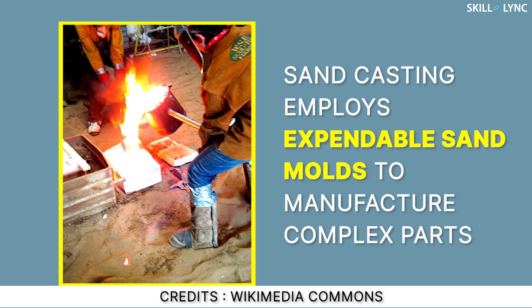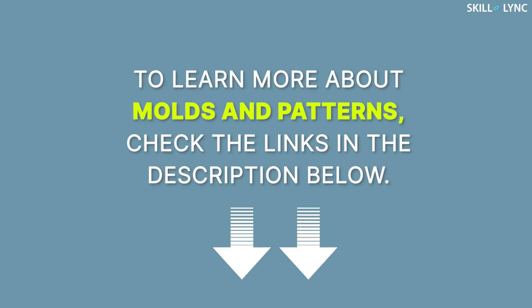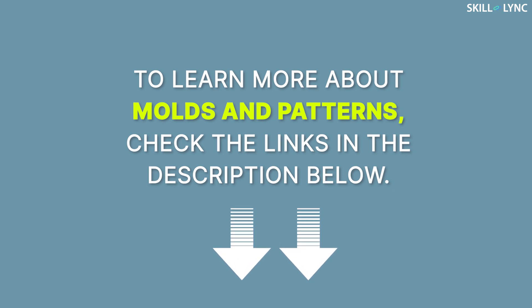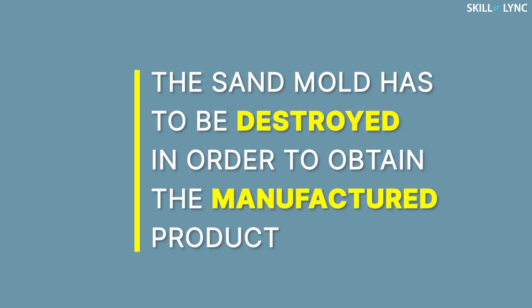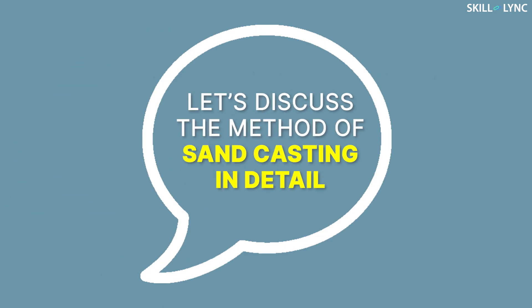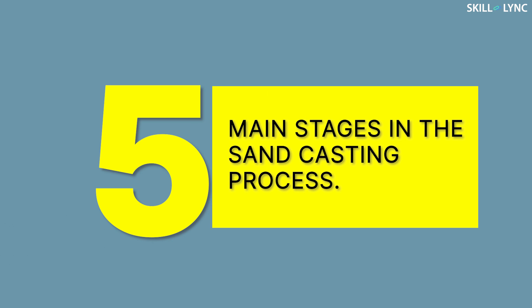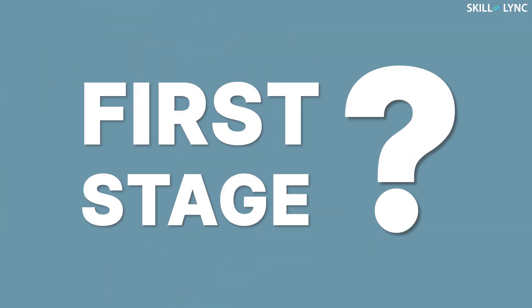Sand casting is perhaps one of the most popular and simplest casting processes. Just as the name suggests, sand casting employs expendable sand molds to manufacture complex parts. For this process, a furnace is required along with molten metal, a sand mold, and a pattern. Sand casting has a low productivity rate because the sand mold has to be destroyed in order to obtain the manufactured product.